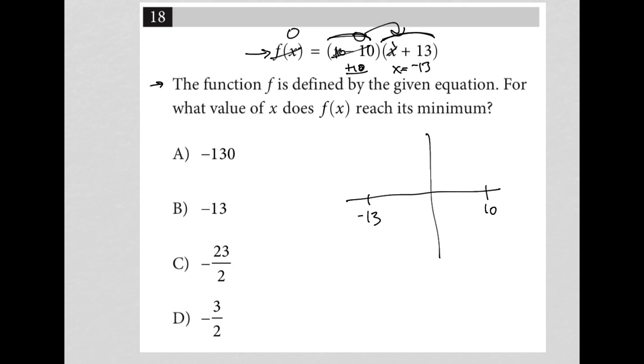Of course, again, because if this were negative 13, this becomes 0, and 0 times 0 is 0. So that's how I know that that's where my intercepts are.